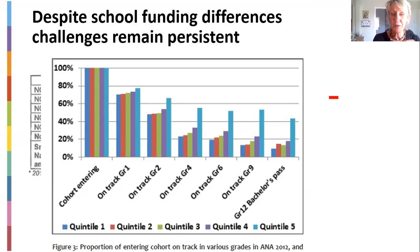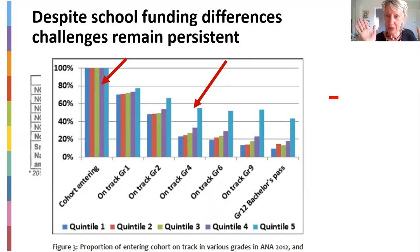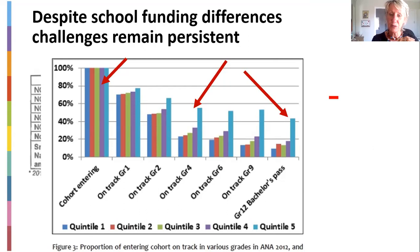Looking at the different quintile schools, when students enter grade one they all seem to be on the same level — they're all achieving the same thing, they're on track. There's a big issue that happens in grade four: it just breaks down totally after the foundation phase. It's only the quintile five schools that are still achieving. The quintile one, two, and three schools just go right down — they go below what they should be doing, all the way until those entering grade 12. So despite the funding differences, there are still many, many challenges facing these different schooling systems.